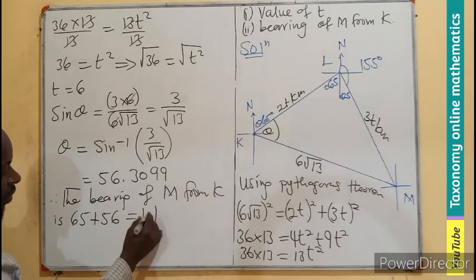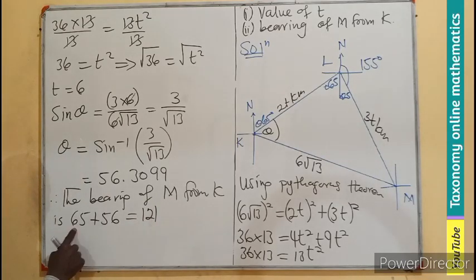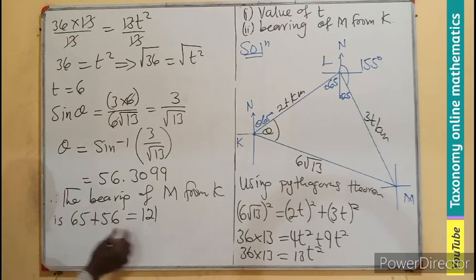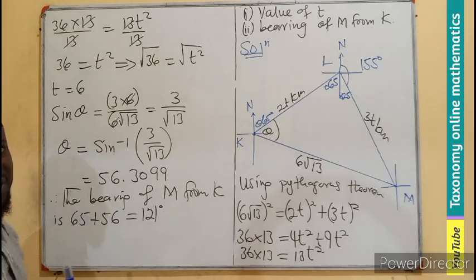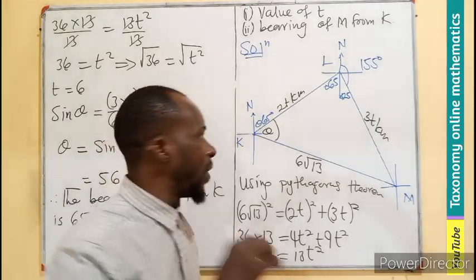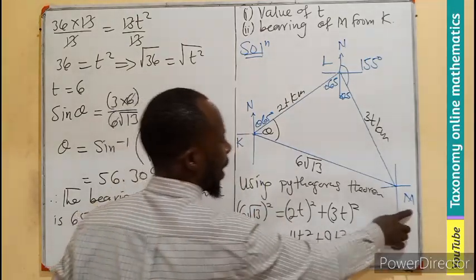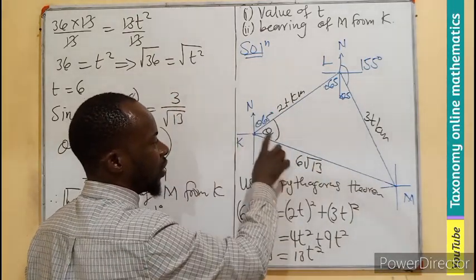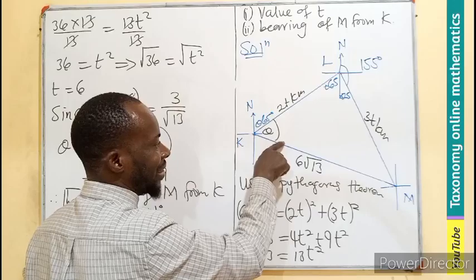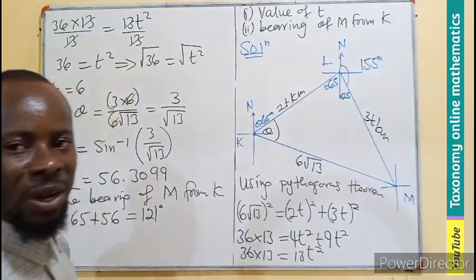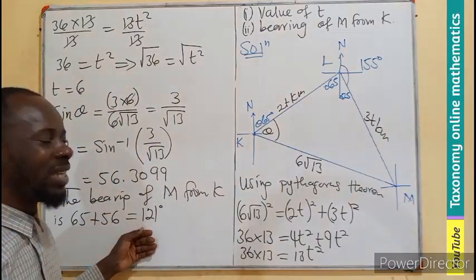we have 121. This is going to be 65 plus 56, that's 121 degrees. So the bearing of M here, all the way from north, will be the north until M. And that will be the value 121 degrees.